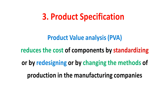The third stage is Product Specification. Besides the general need description, the product specification should be clearly written. It helps the company to zero in on suppliers with the best matching parameters. There is a method called Product Value Analysis, i.e., PVA, to reduce the cost of components by standardizing, redesigning, or changing the methods of production in manufacturing companies. PVA has been a great help in containing the cost of any product.